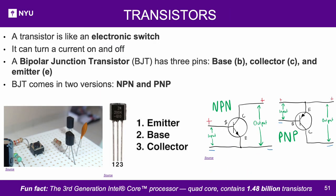Transistors: A transistor is like an electronic switch — it can turn a current on and off. Think of it as a relay without any moving parts. A bipolar junction transistor (BJT) is a common type with three pins: Base (B), Collector (C), and Emitter (E). There are two types of BJTs — NPN and PNP — which differ in construction, working, and applications. In most cases NPN transistors are preferred over PNP transistors.